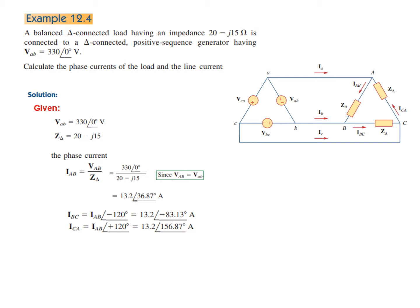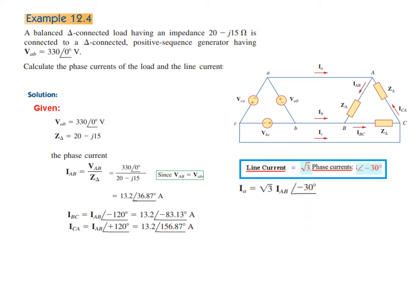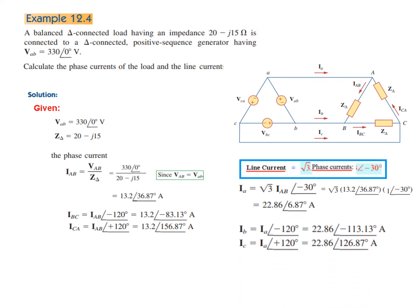The relation is: line current equals √3 times phase current at −30°. Applying this with IAB, we get IA = 22.86∠−6.87° amperes. Since we've found one line current, the other two will simply be 120° apart — IB at −120° and IC at +120° from IA. This is our final answer.